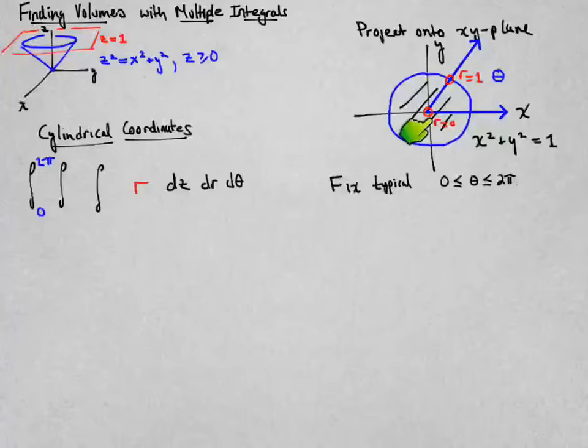And we enter the region at r equal to 0, our radial value of 0. And then we walk along that ray until we get to the radius being 1. And that determines our limits of integration for r.